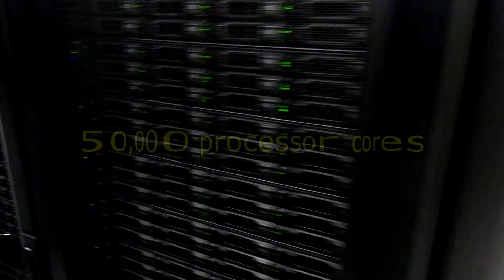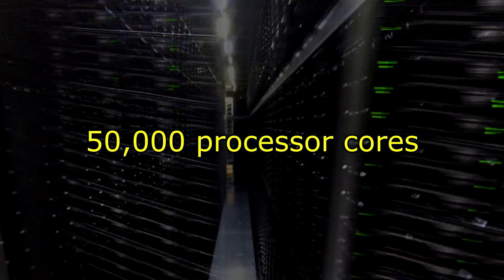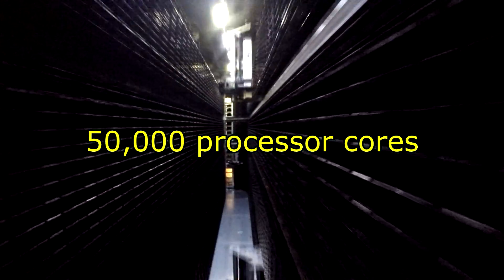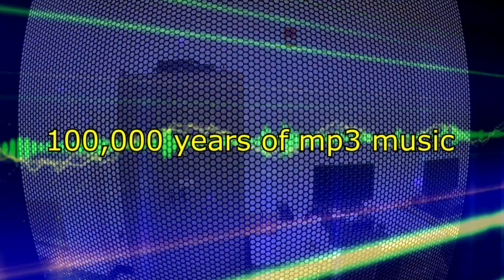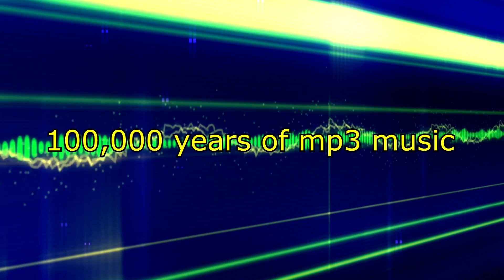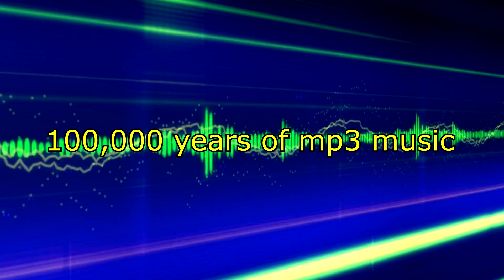By mid-2015, RACF housed 50,000 processor cores, and boasted an online data storage capacity of 50 petabytes, equivalent to roughly 100,000 years of MP3-encoded music.